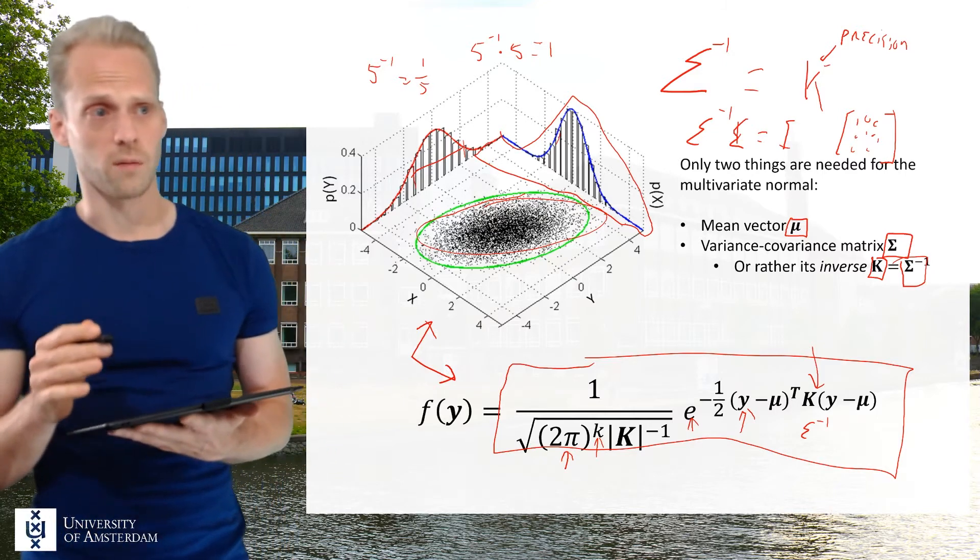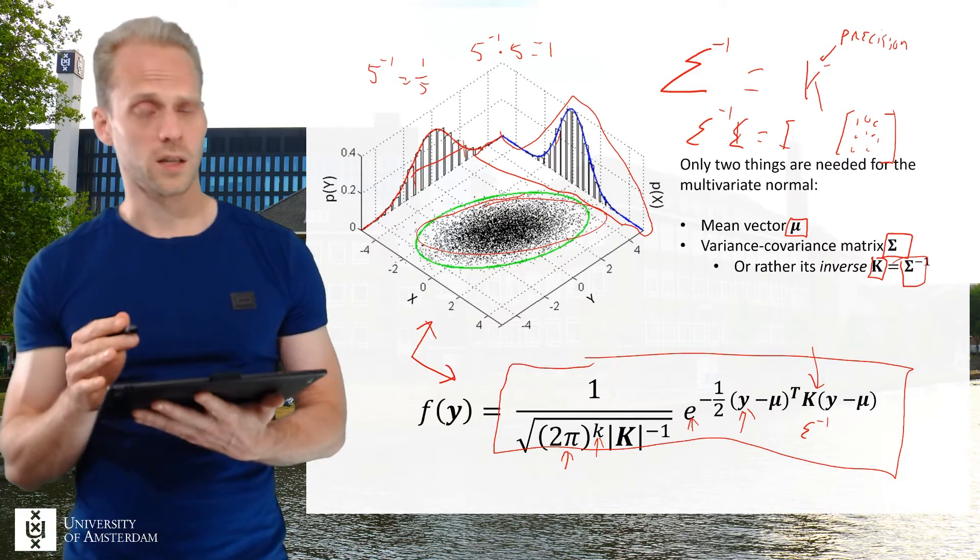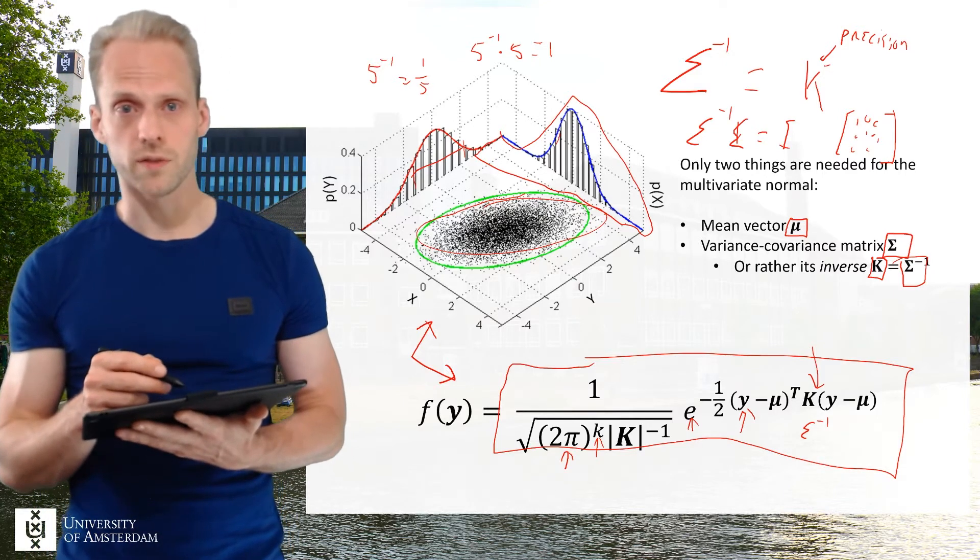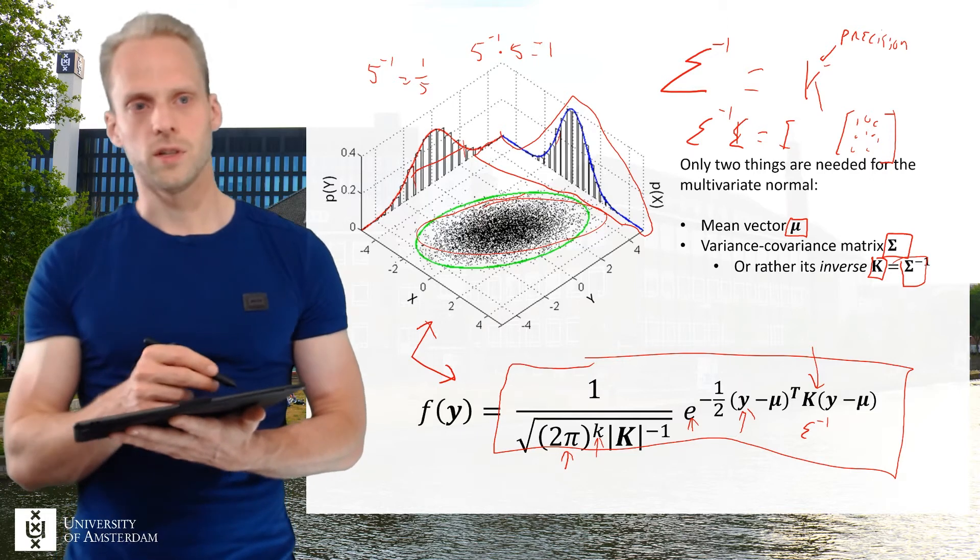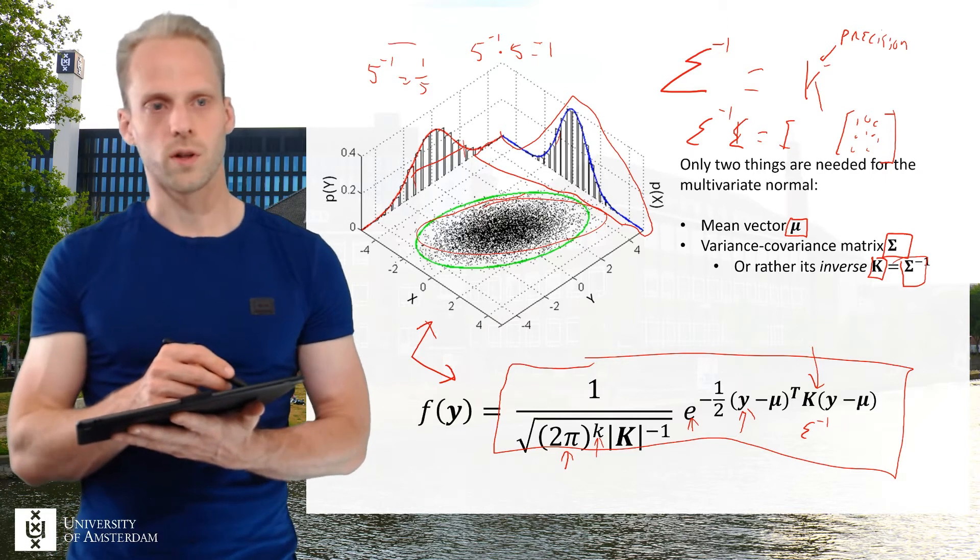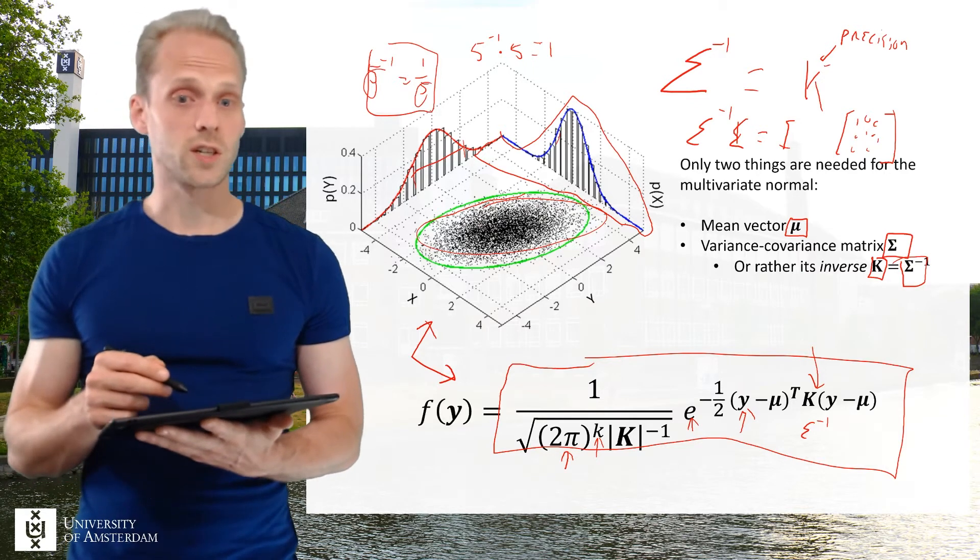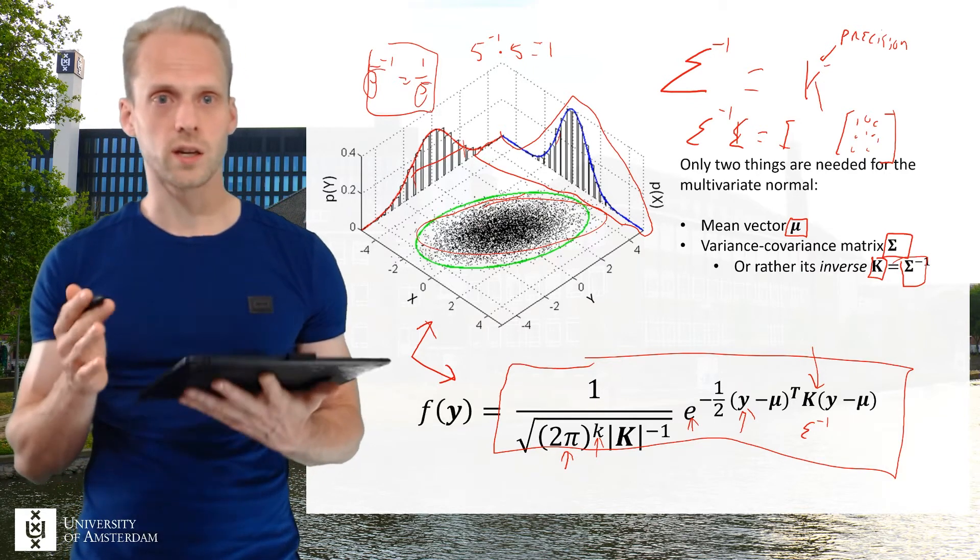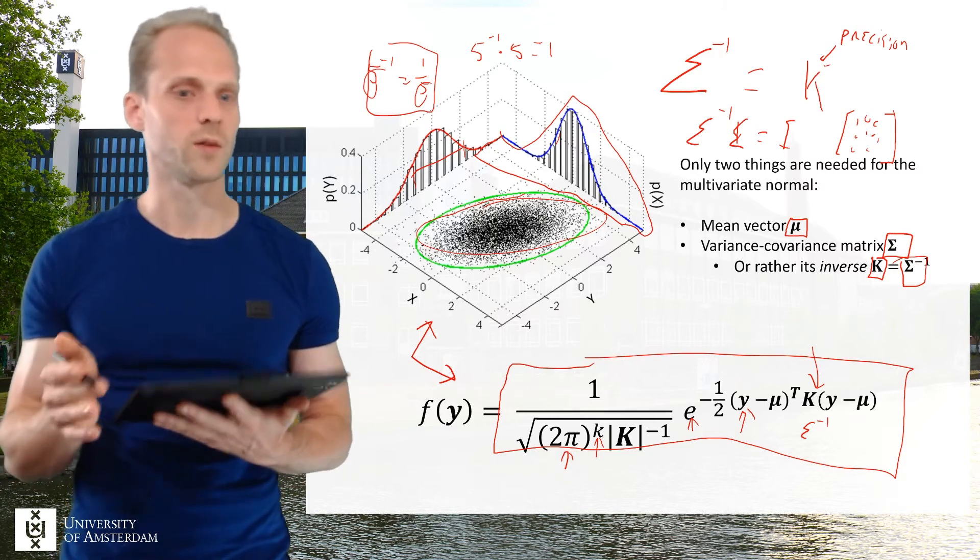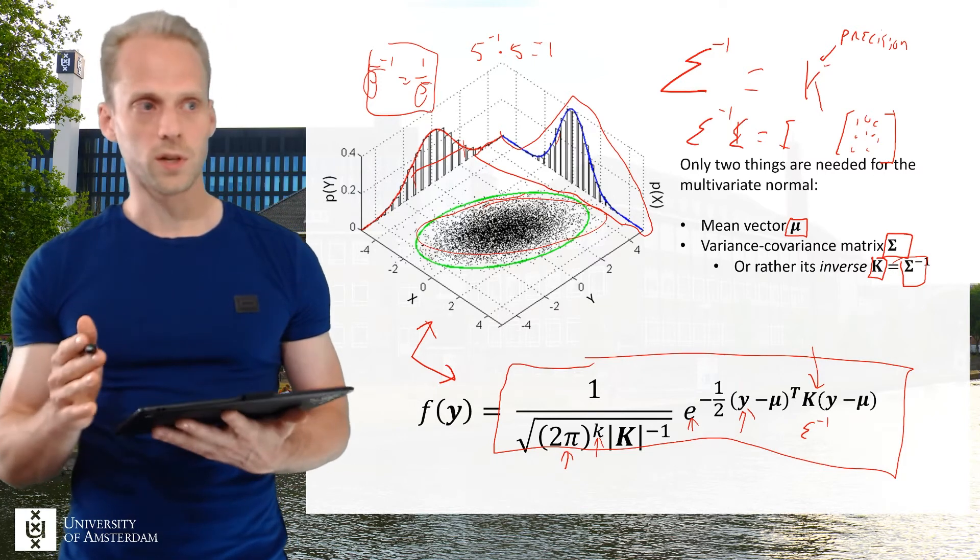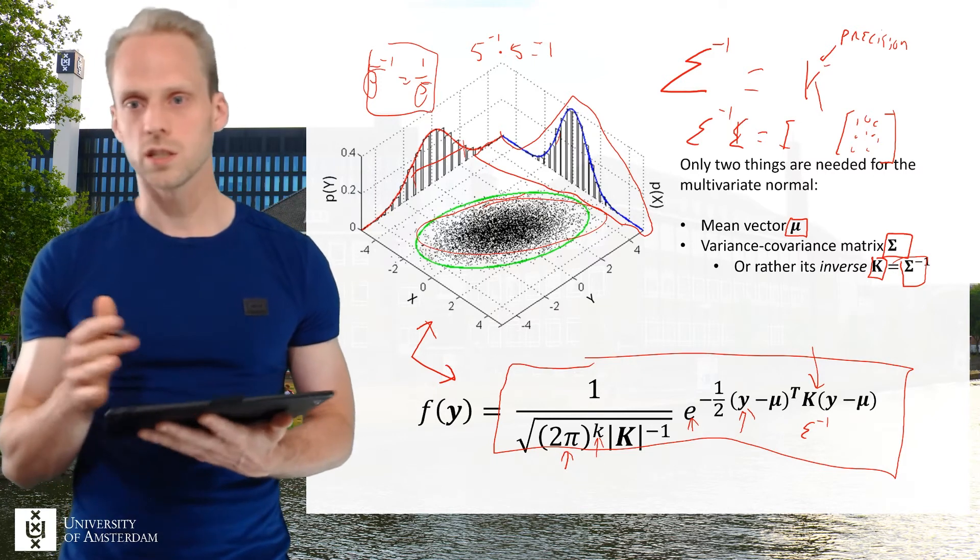Now quite a magical thing that happens is that this inverse variance covariance matrix, which you know is related to numbers like one over five, this inverse variance covariance matrix actually also encodes association between variables, which is a completely bizarre thing if you think about it, but it's actually true and you can prove it.